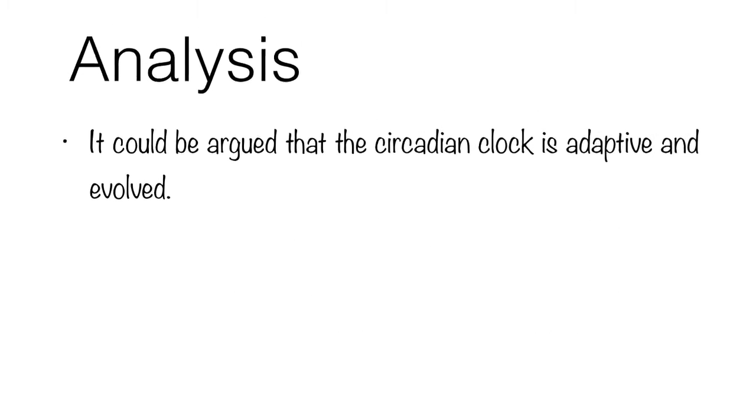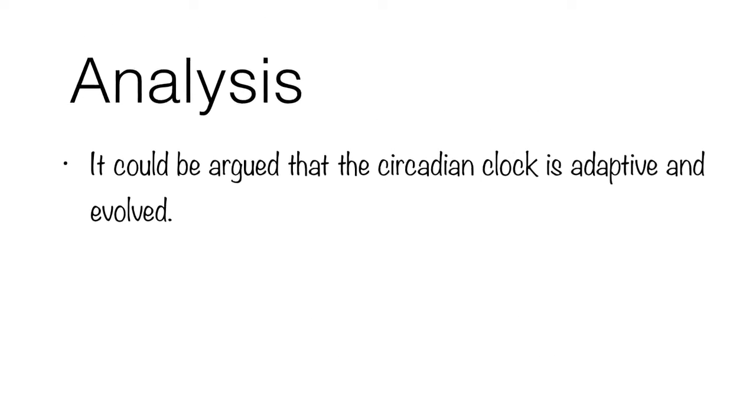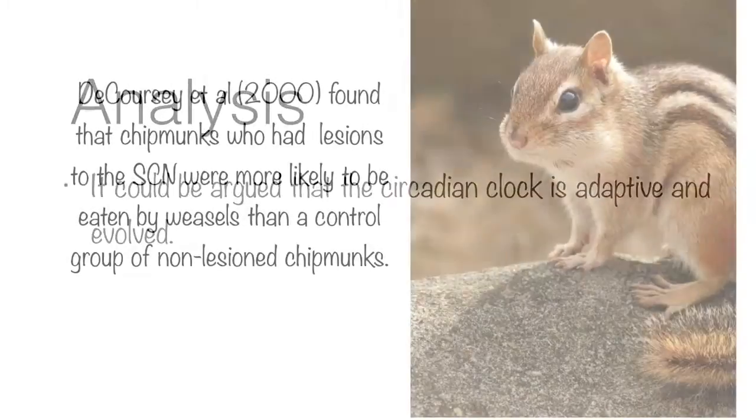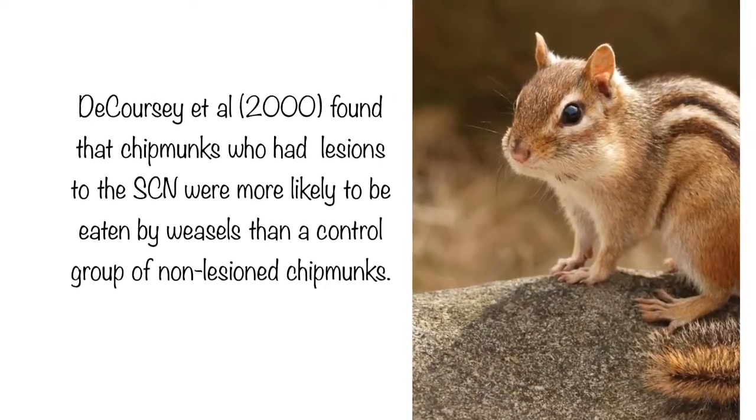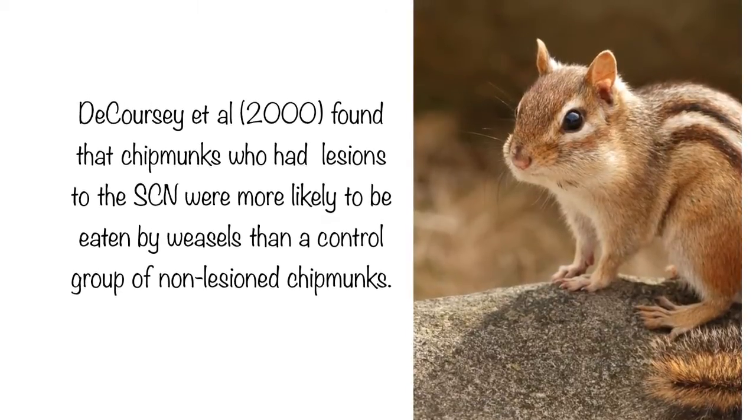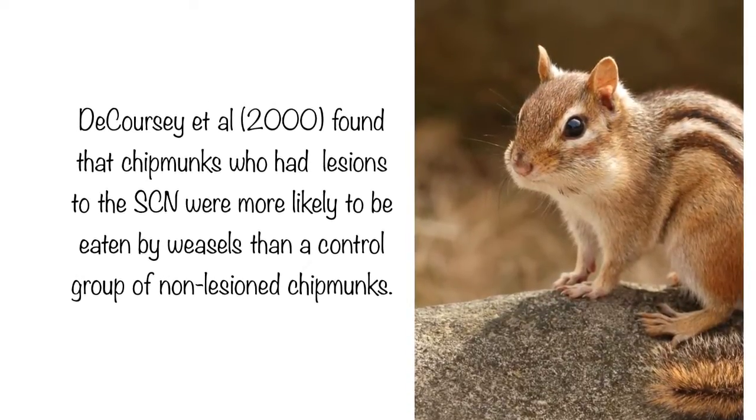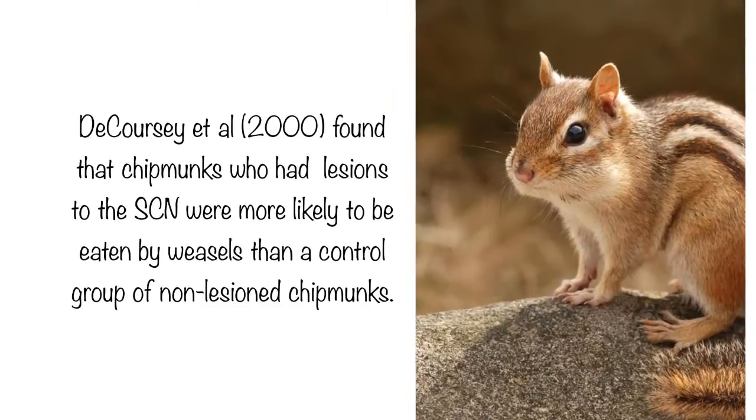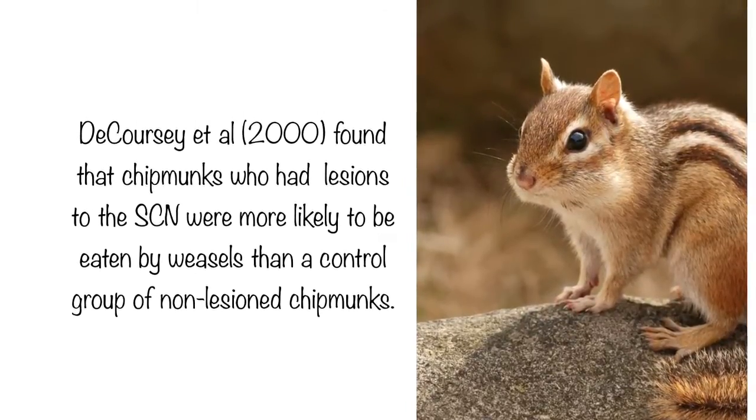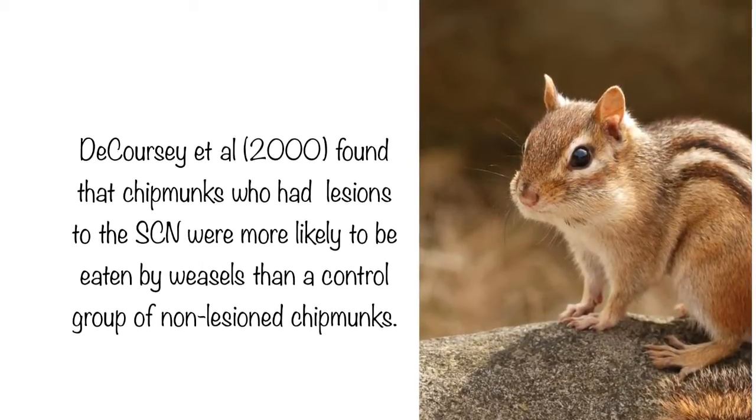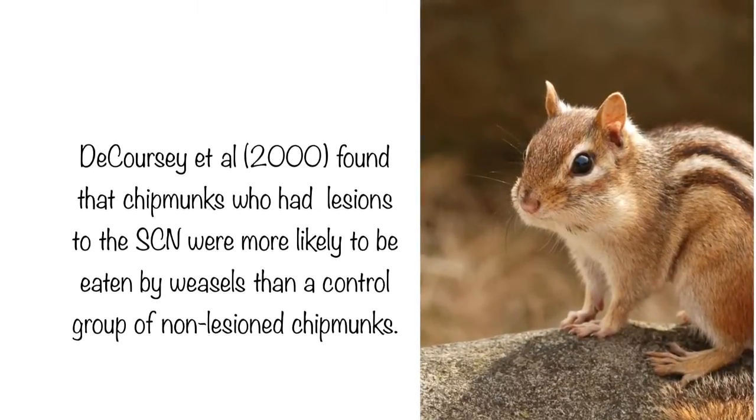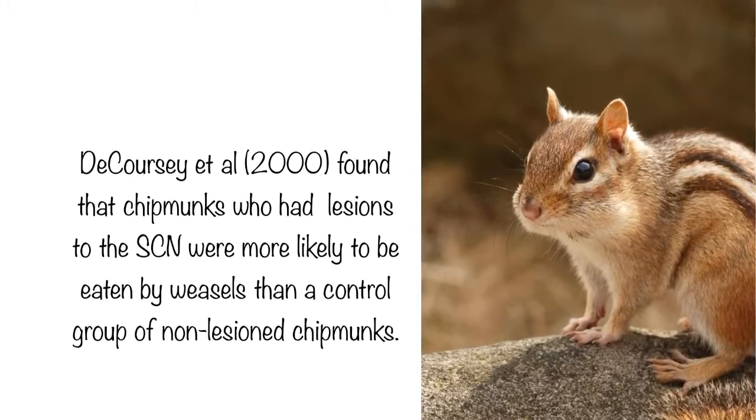It could be argued that the circadian firing pattern of the SCN has evolved to protect animals. For example, research has shown that lesions to the SCN that disrupt the sleep weight cycles of chipmunks results in these animals being eaten by predators because they are not safely tucked away when they are most vulnerable. The adaptive nature of a determined circadian cycle might explain the persistence of the human 24 hour rhythm in the absence of external time cues. Although the adaptive nature of the cycle cannot be falsified, it remains compelling.